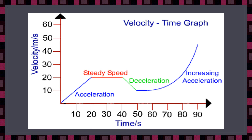This figure shows different types of velocity-time graphs. From 0 to 20 seconds the blue graph shows increasing velocity (acceleration). From 20 to 40 seconds it shows steady speed — constant velocity. From 40 to 50 seconds the green graph shows decreasing speed (deceleration). From 50 to 90 seconds there is an increasing acceleration where the acceleration grows with time.